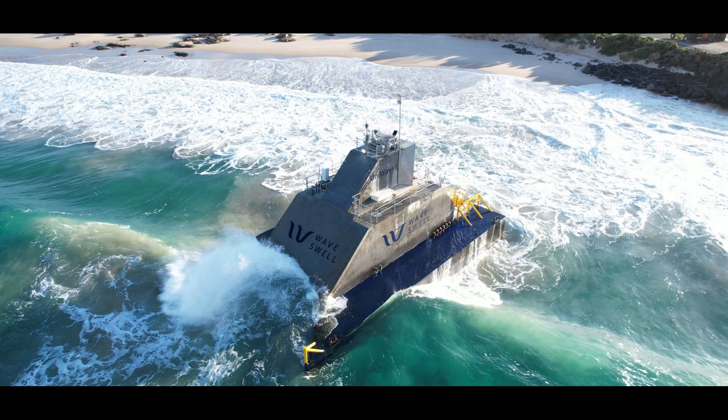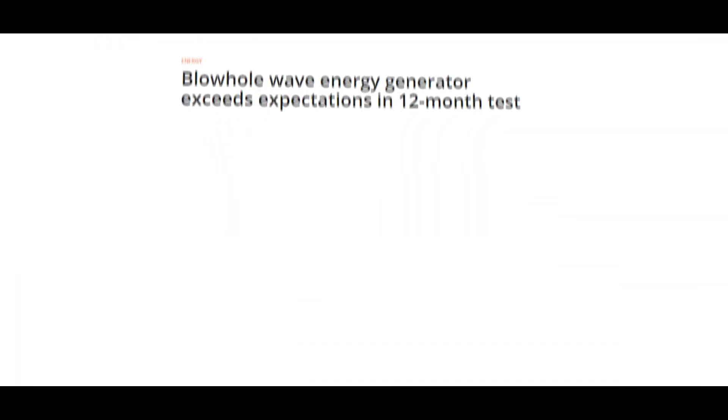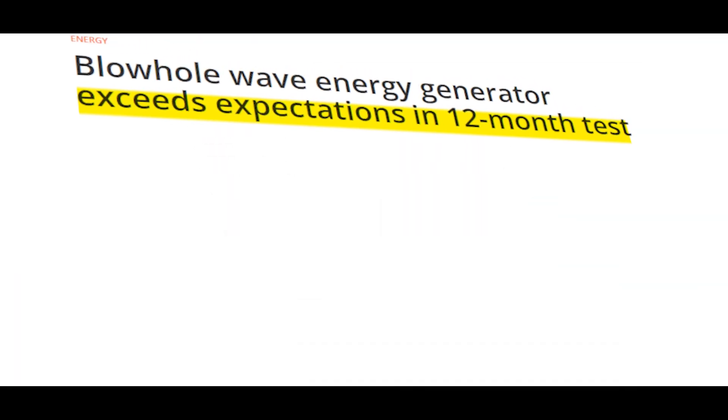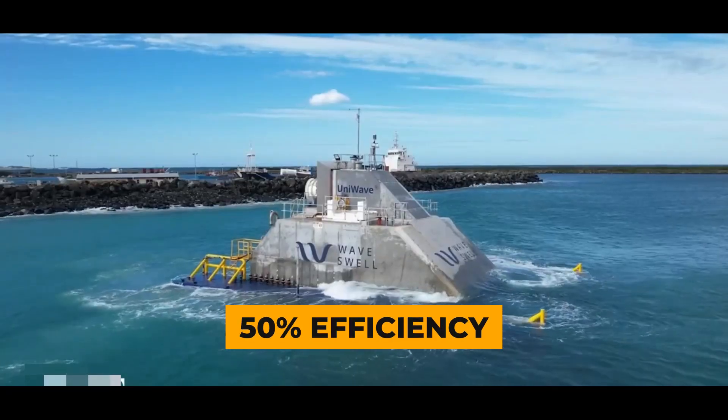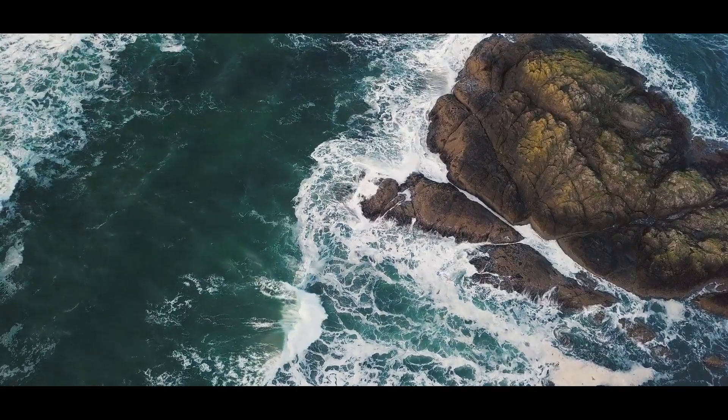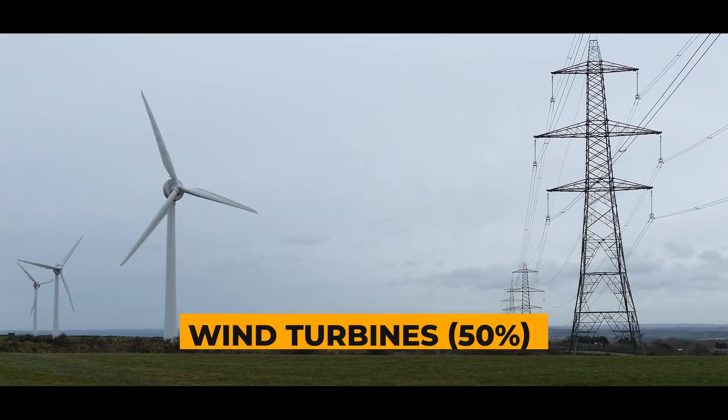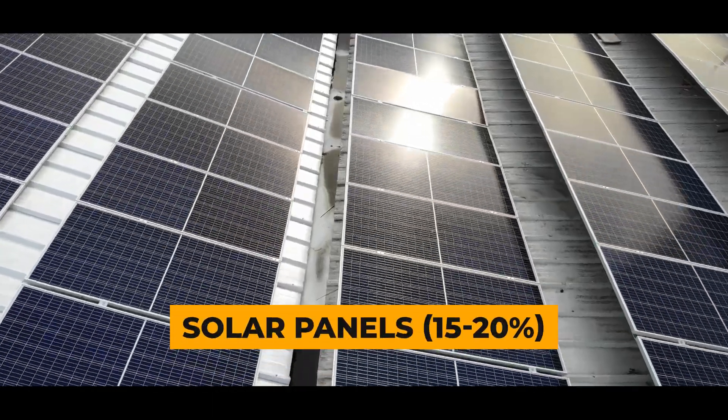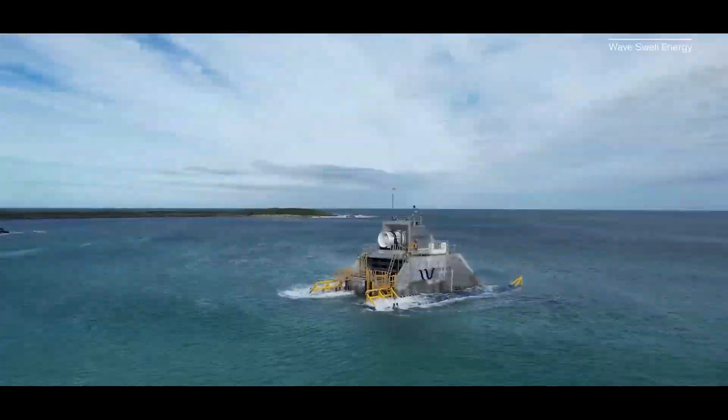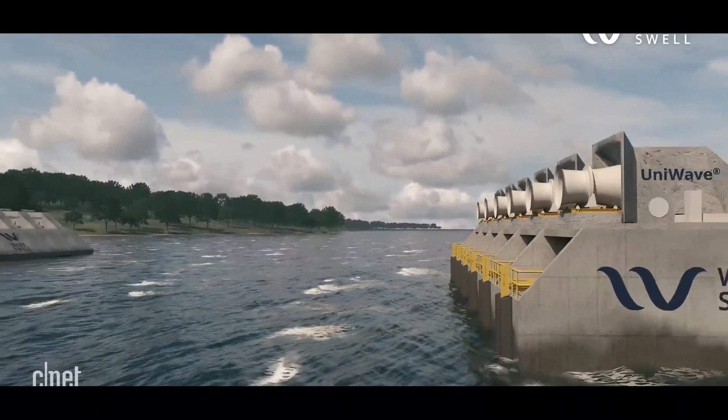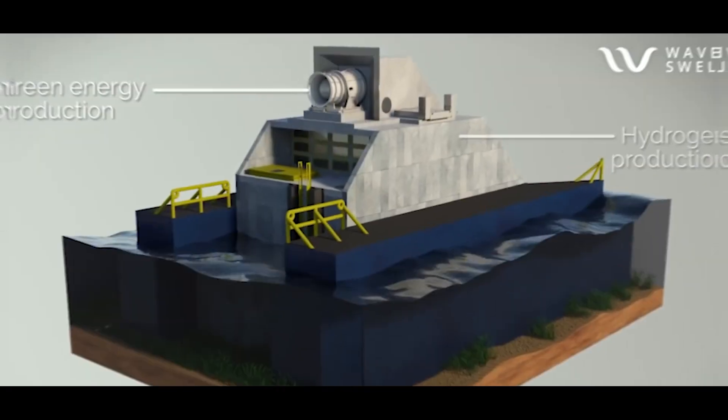The UNIWAVE 200 has already proven its potential, exceeding expectations during a year-long trial off the coast of King Island, Tasmania. During the test, it achieved 50% efficiency, converting half of the captured wave energy into electricity, which is impressive compared to traditional wind turbines at 50%, and solar panels at 15-20%. It showed 80% availability, operating for 80% of the time, demonstrating its reliability and consistency in generating power.